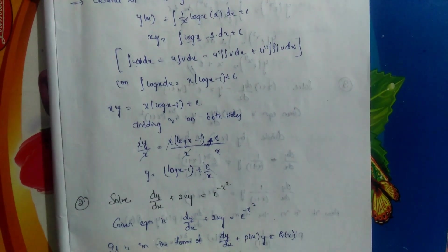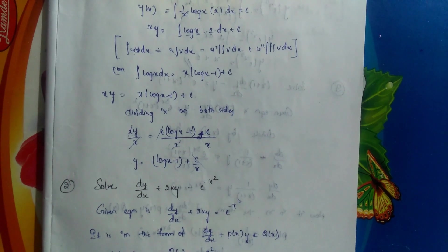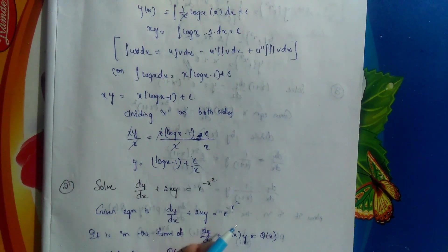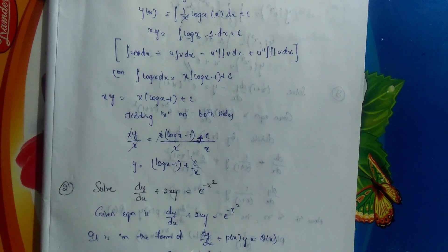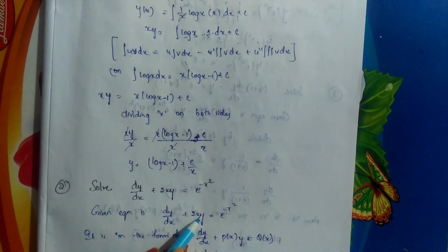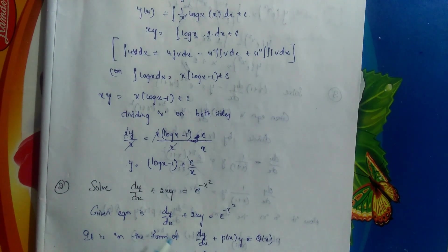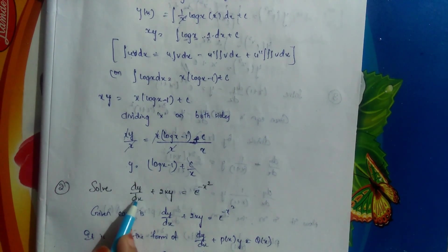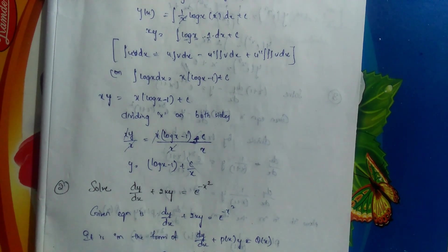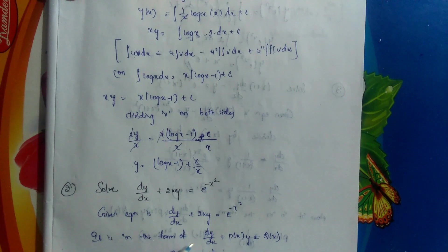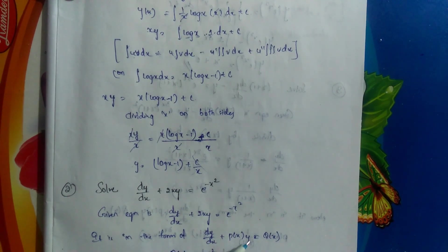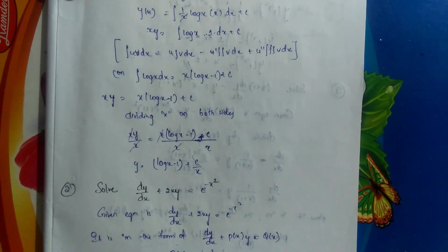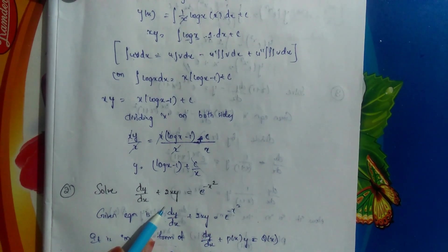Next question: solve dy/dx + 2xy = e^(−x²). The given equation is dy/dx + 2xy equals e^(−x²). Here the coefficient of dy/dx is already 1, so no division needed. Comparing with dy/dx plus P(x)·y equals Q(x), P(x) is 2x and Q(x) is e^(−x²).